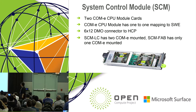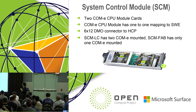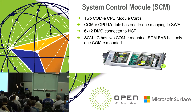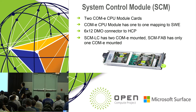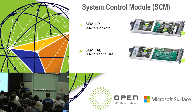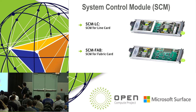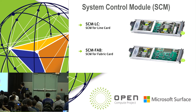SCM — system control module: the system control module is the control plane for the switch ASIC. It can support two ComE switch modules. One ComE switch module maps to one switch element, one switch ASIC — that's a 6×12 configuration connecting to the HCP. We have two SKUs of the SCM: for line cards we populate two ComE modules; for fabric cards we populate one ComE module. The base board is the same — we just populate one or two ComE modules.